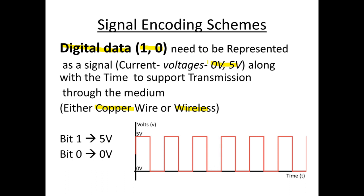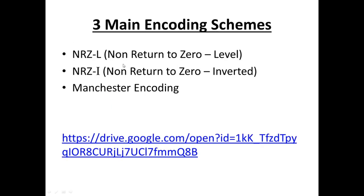Encoding is converting your digital data into a signal format. For example, assume I use 5 volts to represent 1 and 0 volts to represent 0. Then the signal will alternate: 5 volt, 0 volt, 5 volt, 0 volt. But we can't use that as a standard method, so we must use standard methods for these conversions.